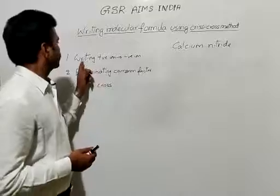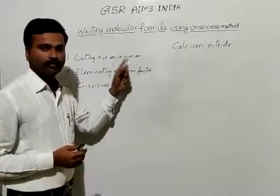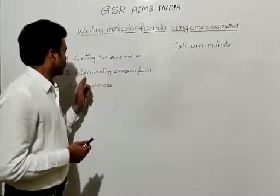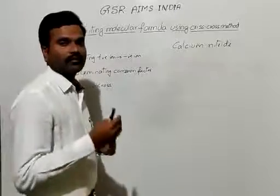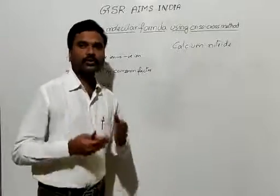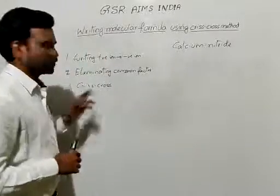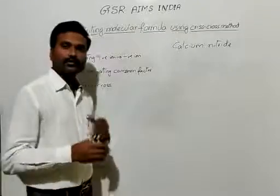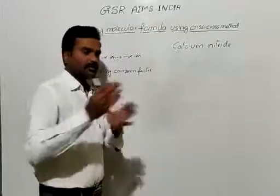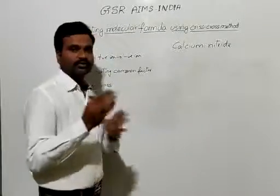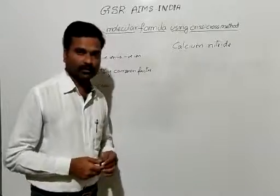The first step is writing the positive ion followed by the negative ion. The second step is eliminating the common factor from the charges of these positive and negative ions. The third step: after removal of these common factors, the remaining numbers are going to criss-cross. By that, we are going to get the molecular formula.